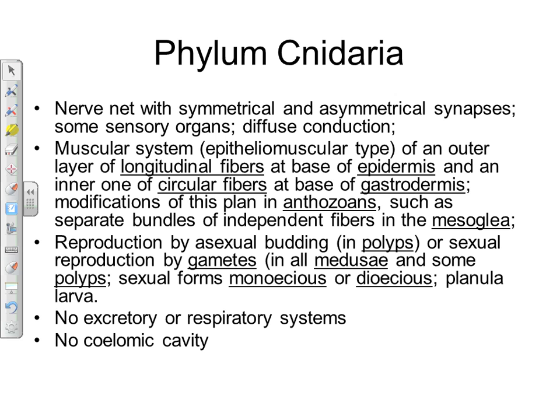Cnidarians are more complex than sponges — they have a simple nerve net that helps them respond to stimuli, such as firing their stingers. Their nervous system typically includes two kinds of nerves: longitudinal nerves running the length of the body, and circular nerves. In terms of reproduction, they usually have an asexual budding phase — typically in the polyp stage — and a sexual phase in the medusa stage, where they release gametes, form a larva, and continue the cycle.